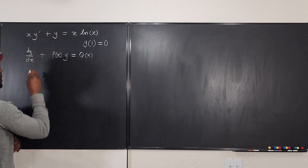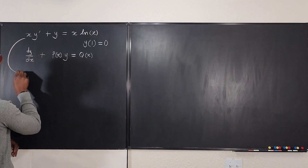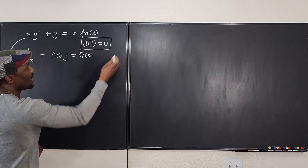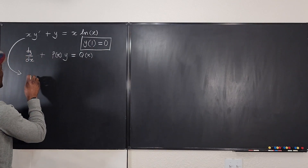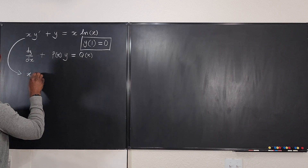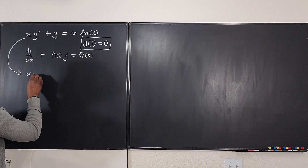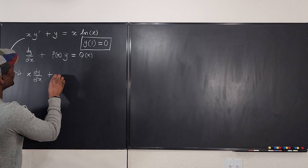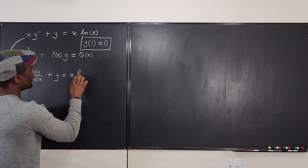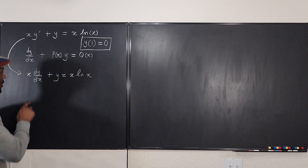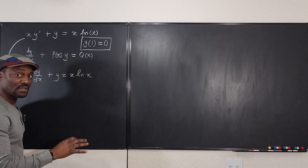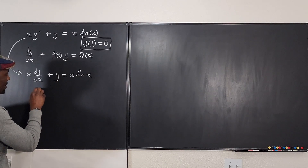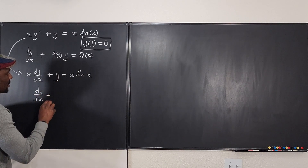I'm going to rewrite y-prime as dy/dx. This is the standard form — don't forget — and we also have an initial condition, which will help us find the constant at the end. So we have x multiplied by dy/dx plus y equals x times the natural log of x. We need the dy/dx term to stand alone, so I'm going to divide every term by x.